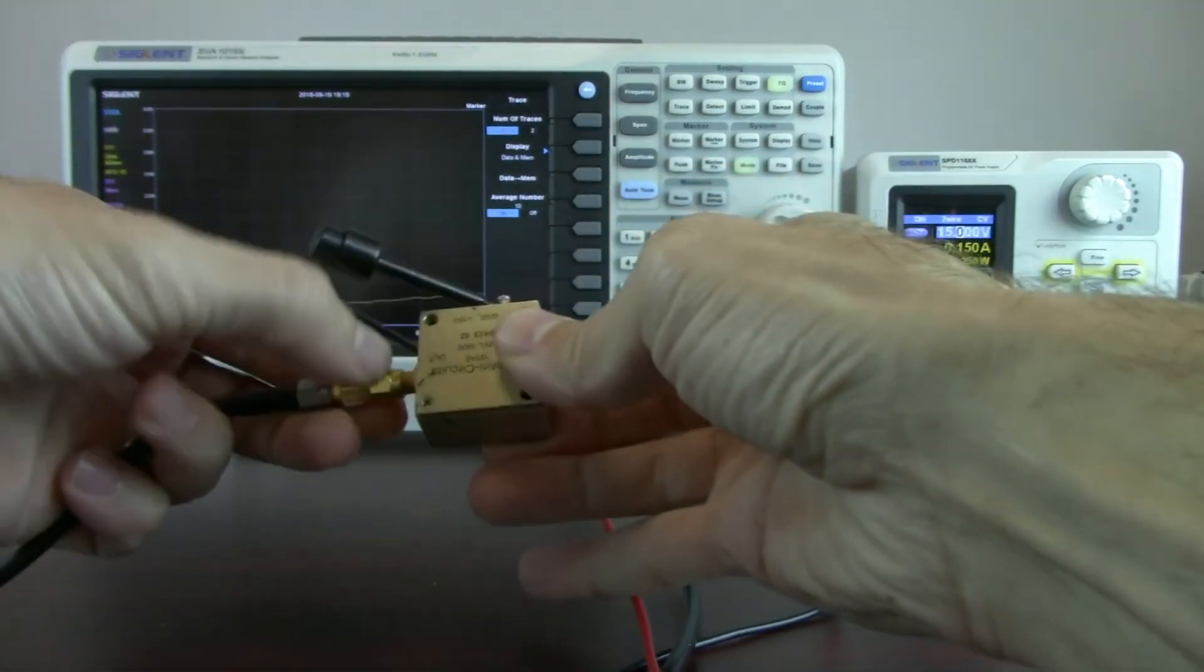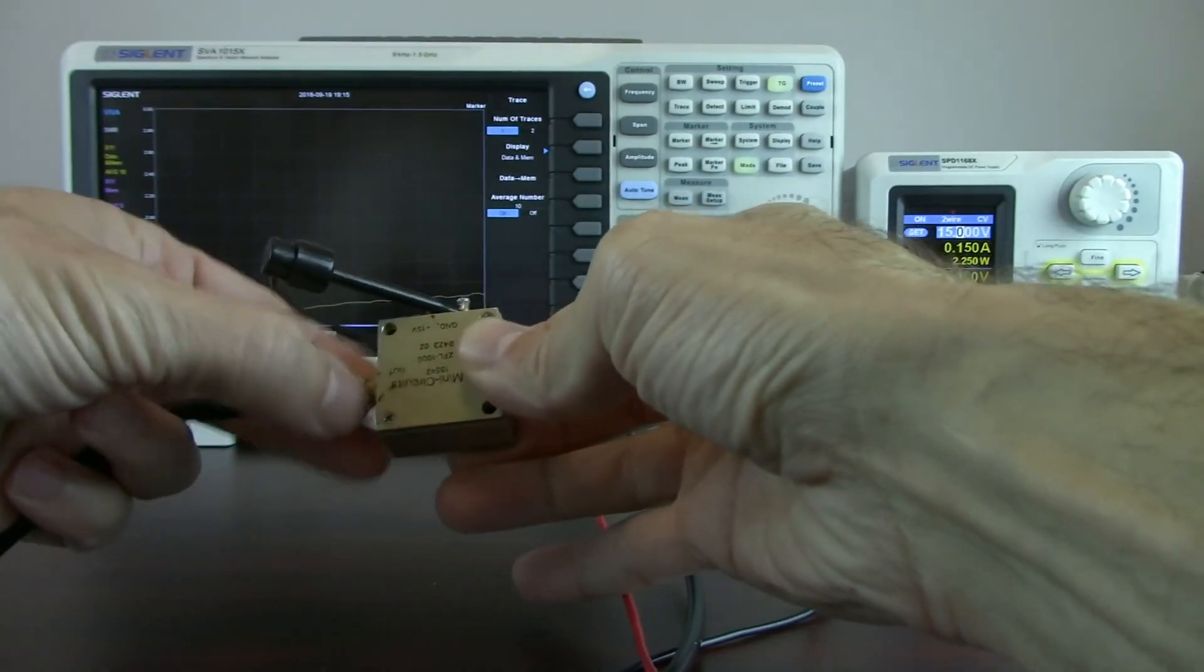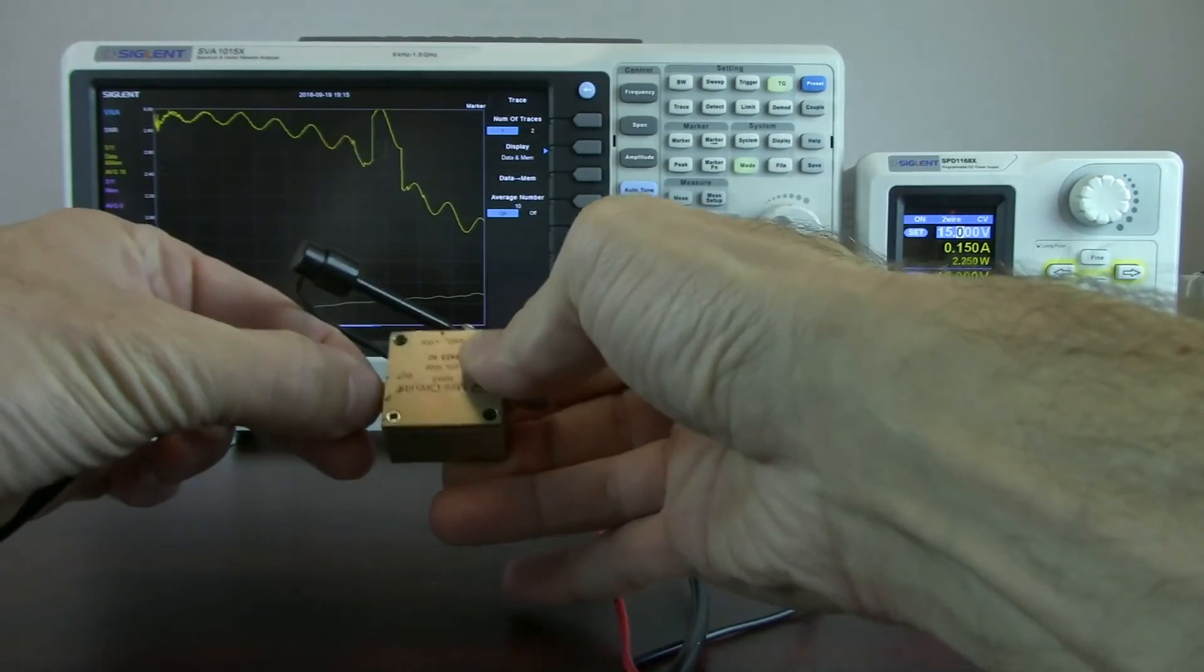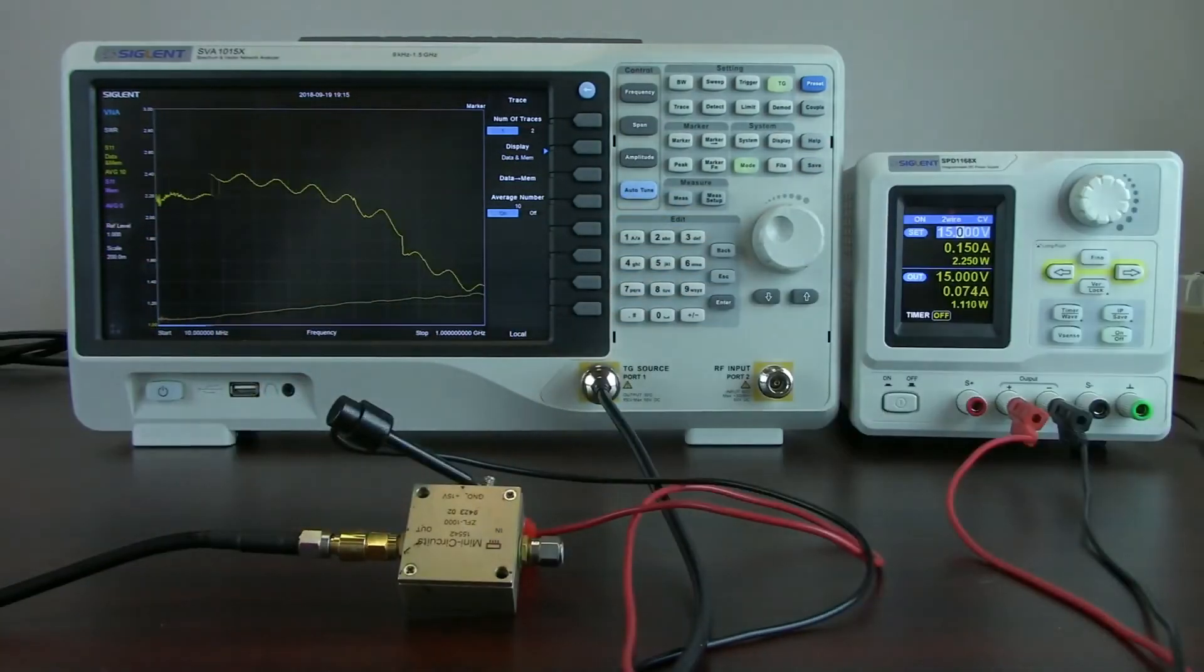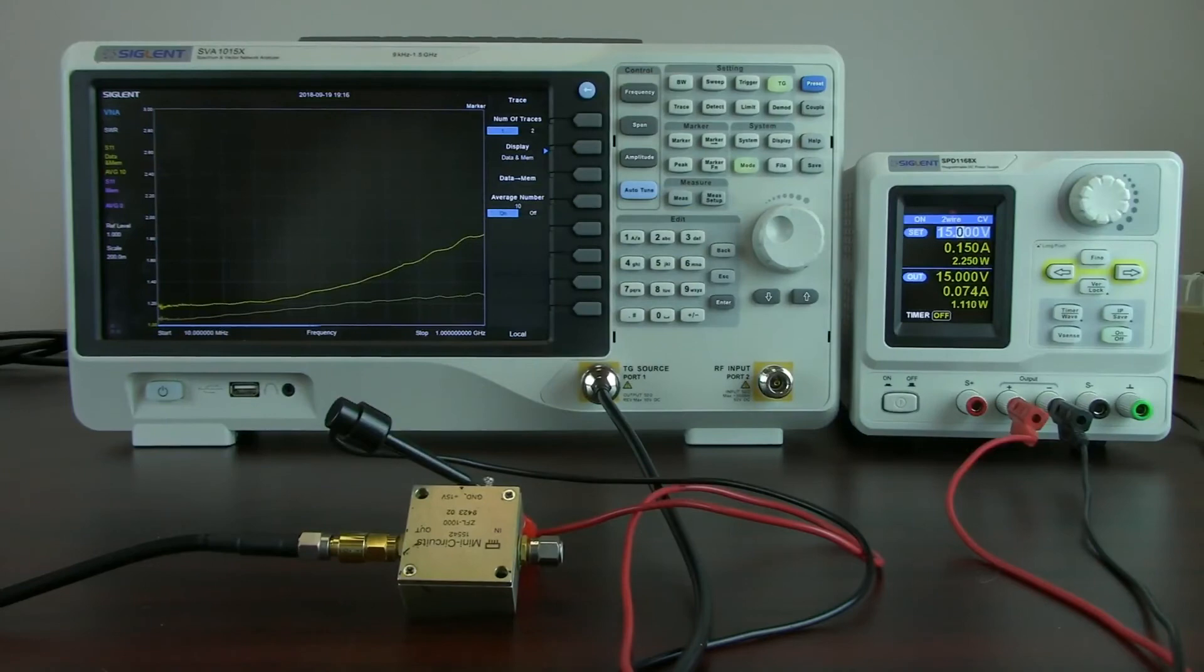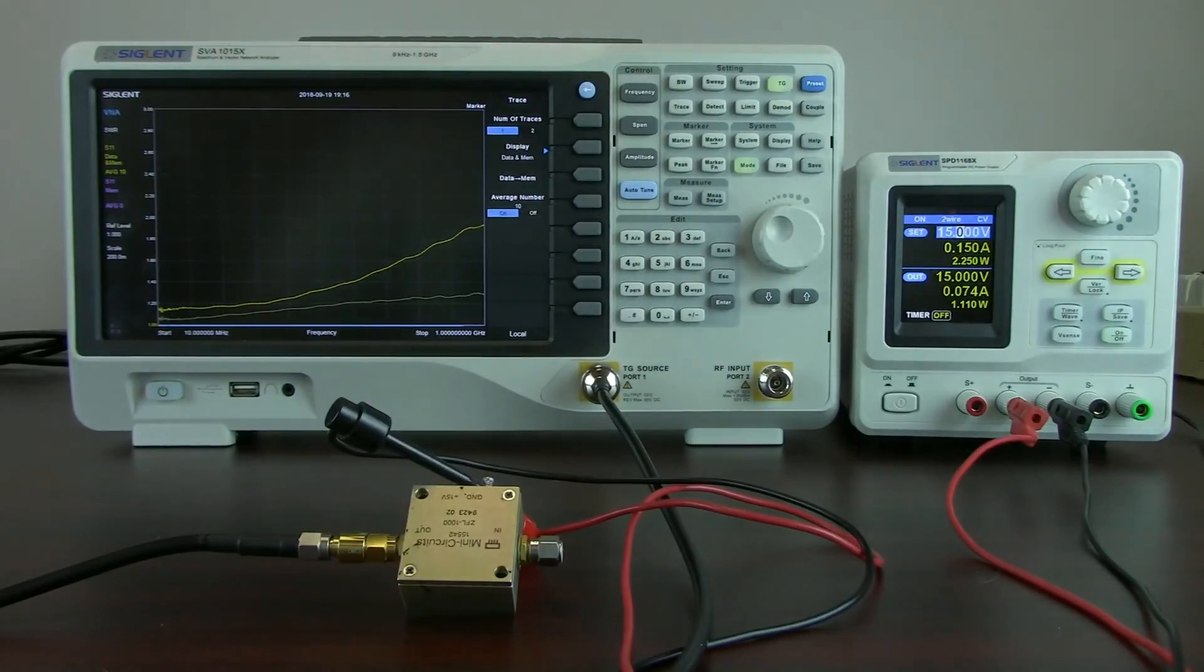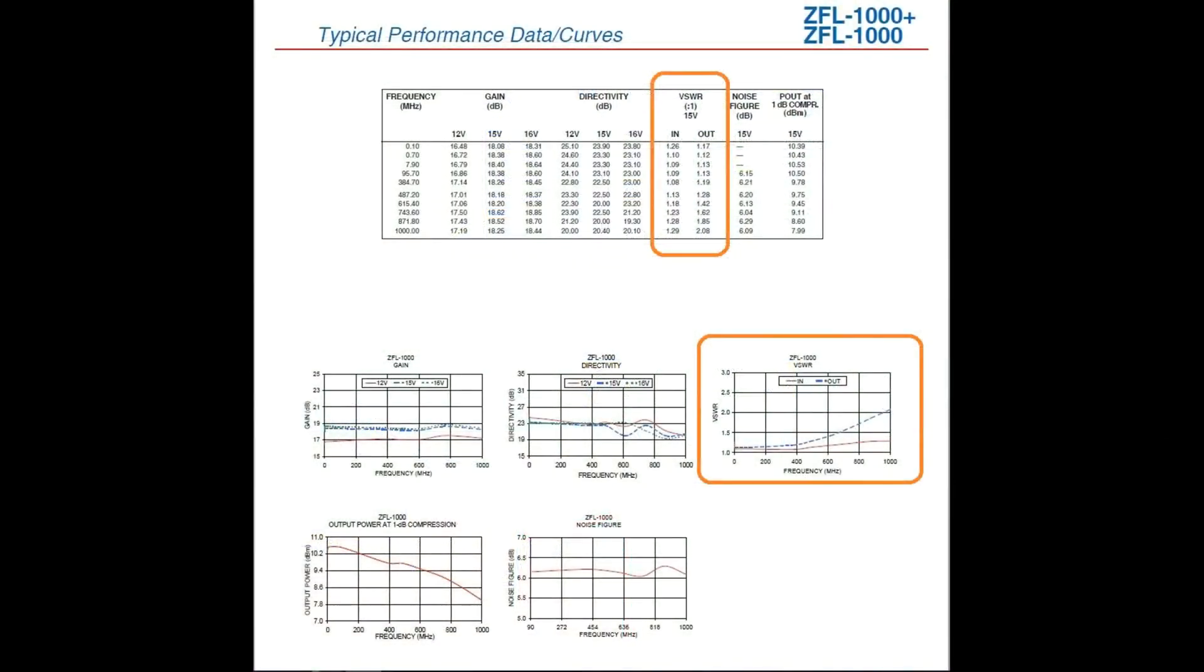And again, we do have this set to do averaging. So it's going to take a few scans to get into shape here. Excellent. So we'll let it settle out here. I could have started just by turning off the averaging and then started back over again. Sorry about that. But now we could see that secondary curve very close again to our first curve.